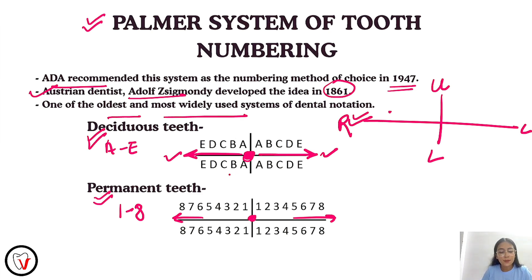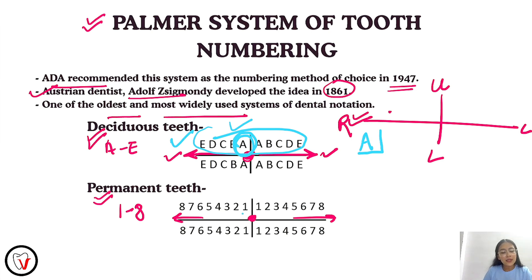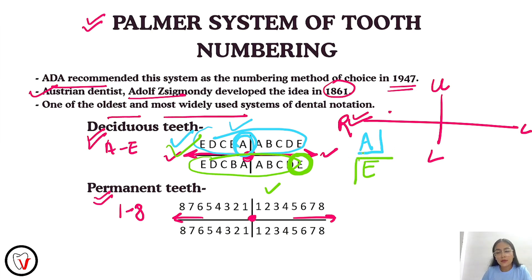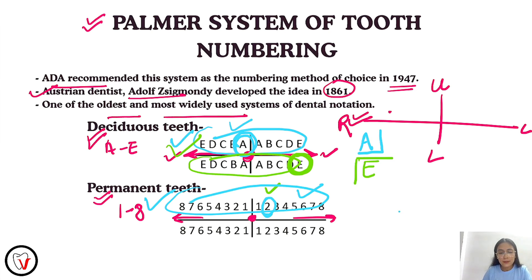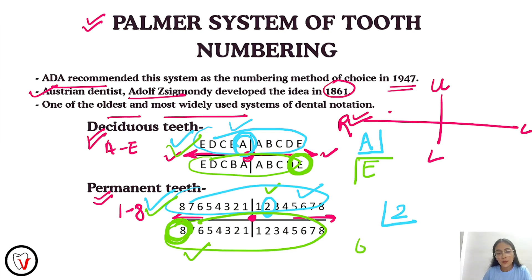For example, how will we denote the primary maxillary right central incisor? We'll write it as A with the appropriate quadrant mark. For the primary mandibular left second molar, we'll write it as E with the mark below and to the left. We specify the quadrant by the mark placed above or below the letters. Likewise, for the permanent maxillary left lateral incisor, we'll write it as 2 with the quadrant mark. For the permanent mandibular right third molar, we'll write it as 8 with the mark below and to the right.